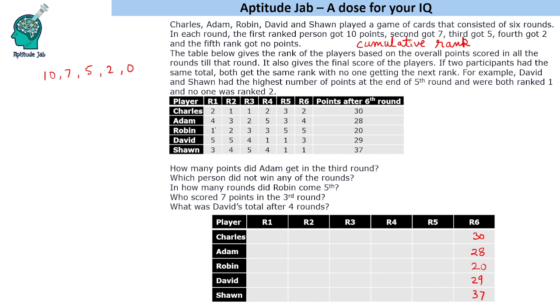Points after the first round can also be calculated directly. The second person got 7 points, the fourth person got 2 points, another got 10 points, one got 0 points, and one got 5 points.